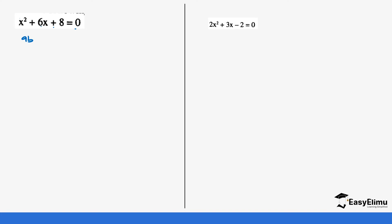Our AB is going to be 1 times 8, which gives us positive 8. And our sum is positive 6. We need two numbers: if you multiply them you get 8, and if you add them you get 6. These two numbers are 4 and 2 — 4 times 2 is 8, and 4 plus 2 is 6.